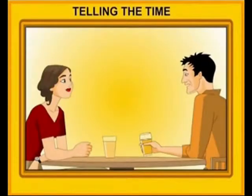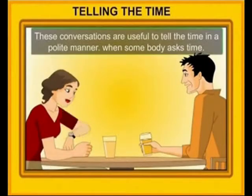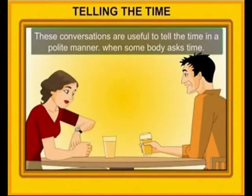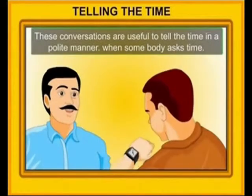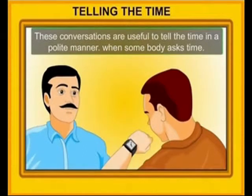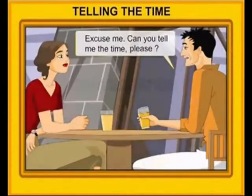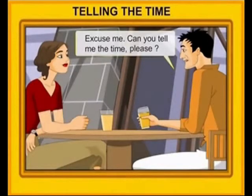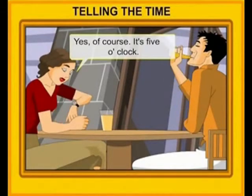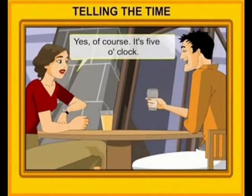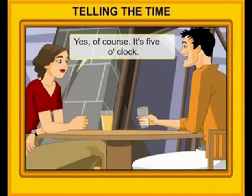Telling the time. These conversations are useful to tell the time in a polite manner. When somebody asks the time. Conversation 1. Excuse me, can you tell me the time, please? Yes, of course. It's 5 o'clock. Thank you.